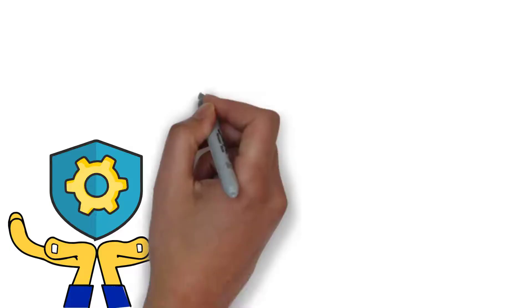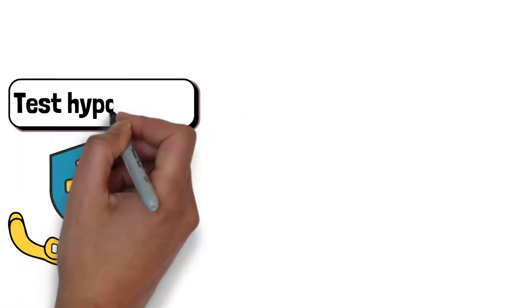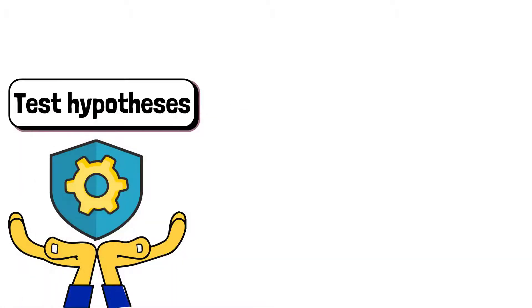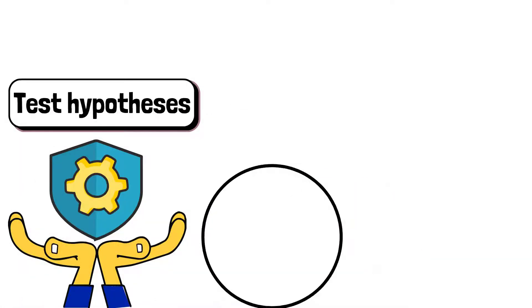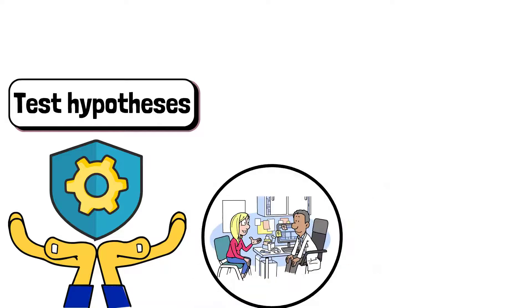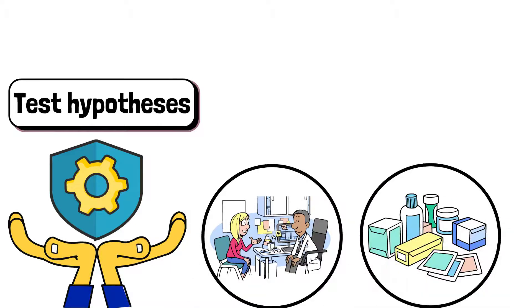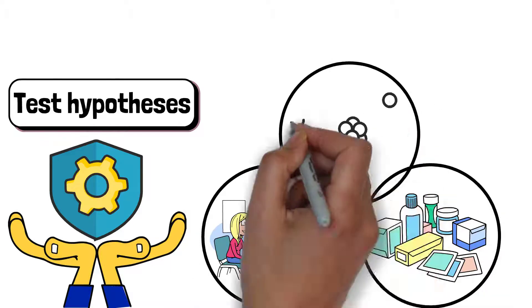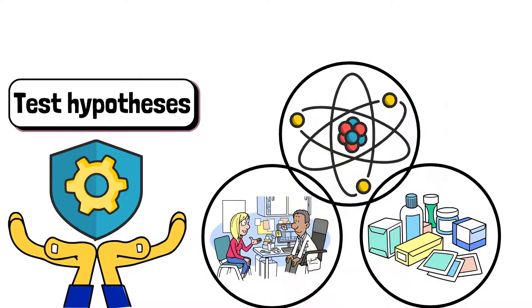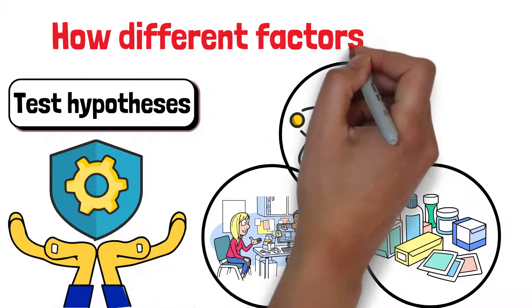experimental research offers a precise way to test hypotheses. This method is especially useful in fields like psychology, medicine and the natural sciences, where it's important to understand how different factors interact.